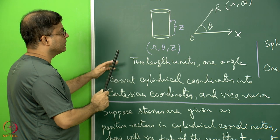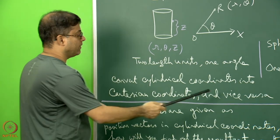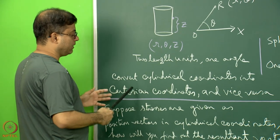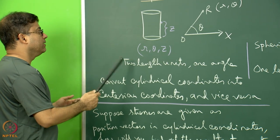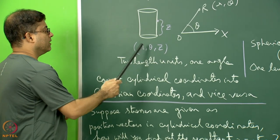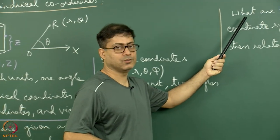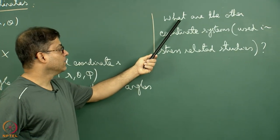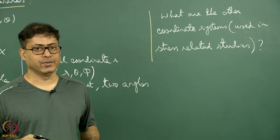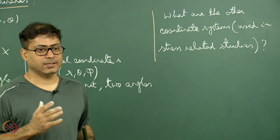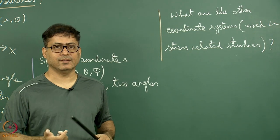There are two other coordinate systems used in stress-related studies. Students are encouraged to find out what they are through self-study and to derive the conversions between those coordinate systems and the Cartesian coordinate (X, Y, Z), and vice versa.